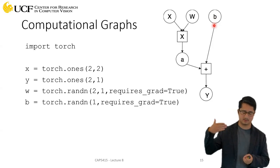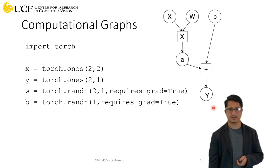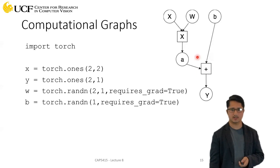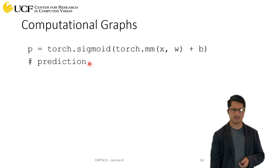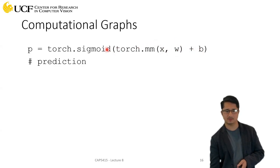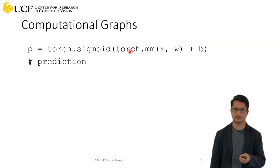You multiply x by the weights to get a, and b represents the biases. The standard neural network equation is: y = x * weights + biases. You define all these variables in PyTorch, then write one line: torch.matmul(x, w) + b, and apply a sigmoid activation to get the prediction p. This single line defines a neural network.